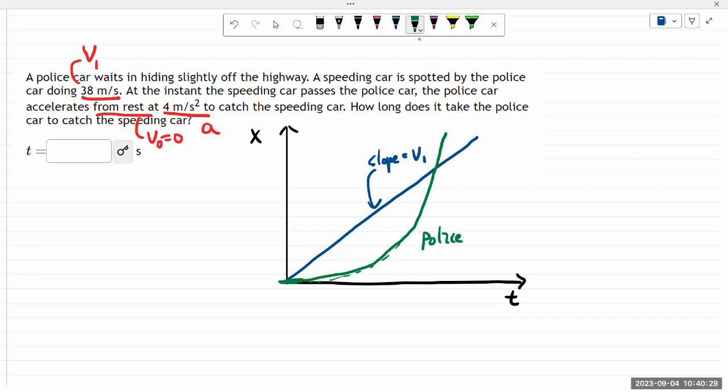And this curve will be expressed by equation. The position is initial position was zero, initial speed was zero. And basically all of this will be described by the acceleration component, one half a t squared.